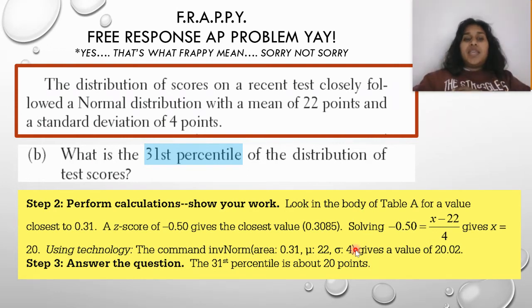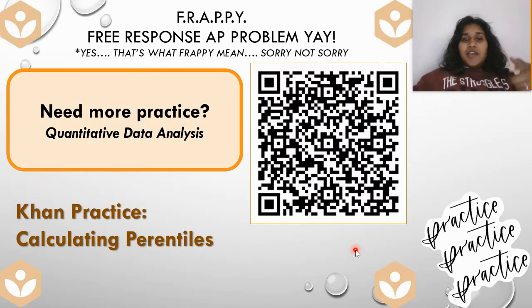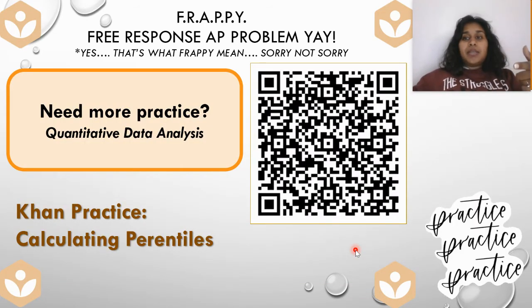So the 31st percentile is about 20 points. Let's move on to question C. Of course, here's your Khan practice, calculating percentiles.